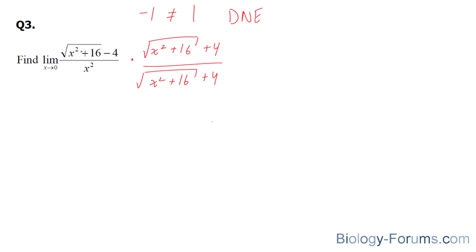Essentially what we're doing is that we're expanding. So if you multiply this with this, you end up with x squared plus 16, and of course the square roots go away. This multiplied to that is equal to 4 square root of x squared plus 16, and this multiplied to this is equal to negative 4 square root of x squared plus 16, and lastly negative 4 times 4 is equal to negative 16, and this term will cancel out, and this term and this term will also cancel out.